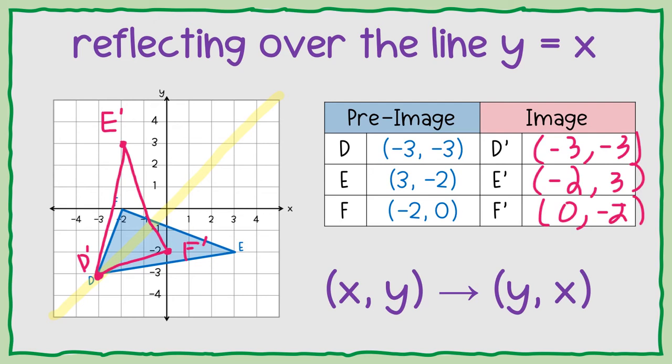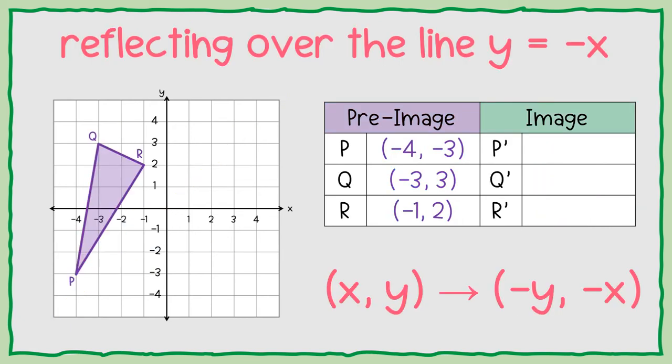So there is a diagonal going the other direction. So what if I wanted to reflect over the line y equals negative x? That's the diagonal that starts at the top and goes down.